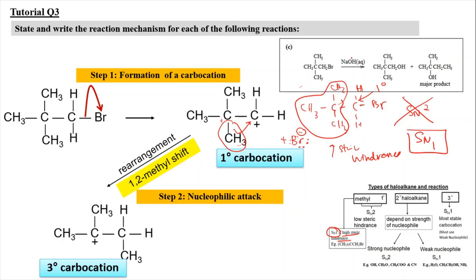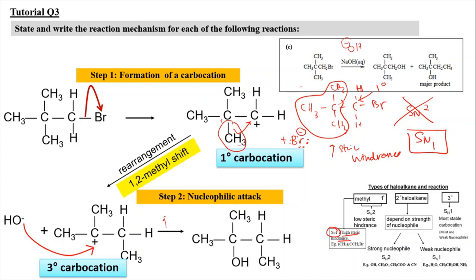The hydroxide from NaOH, acting as the nucleophile, attacks the electrophilic C⁺ in a fast step, attaching the OH group to the carbon and forming the major product. This shows formation of the major product after rearrangement — a tertiary alcohol. Without rearrangement, the OH can also attack the primary carbocation directly, producing a minor product where OH is attached on the last carbon.